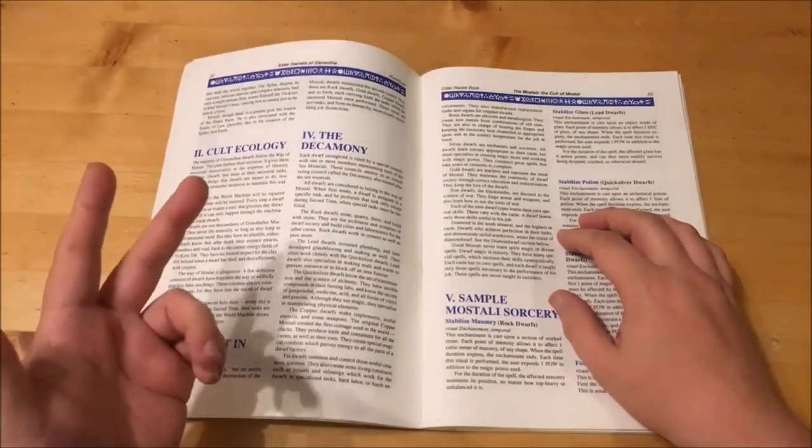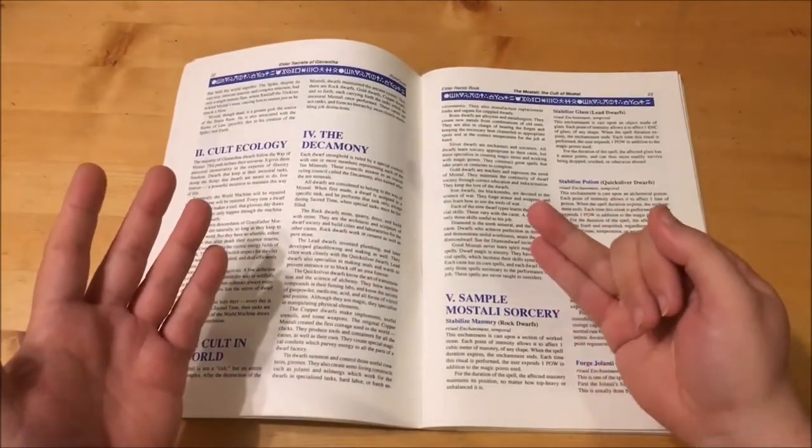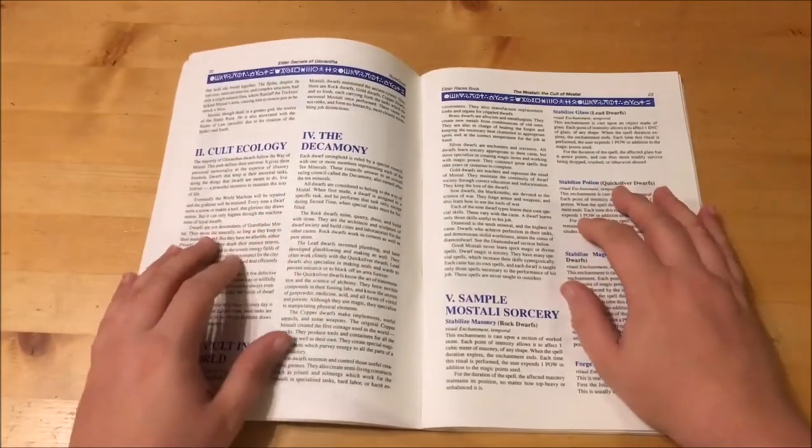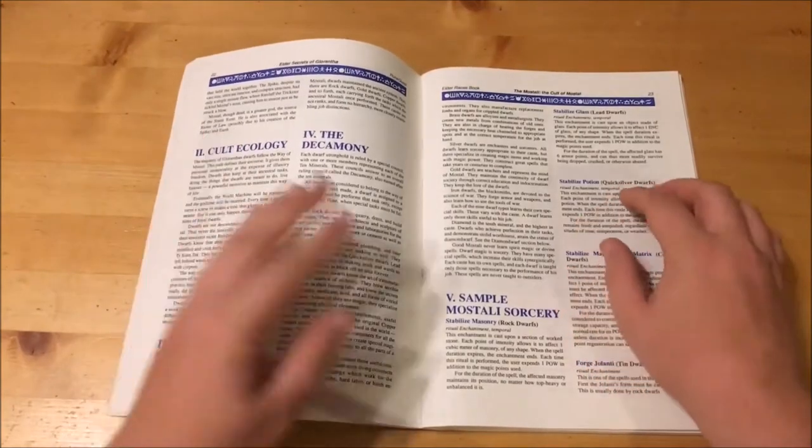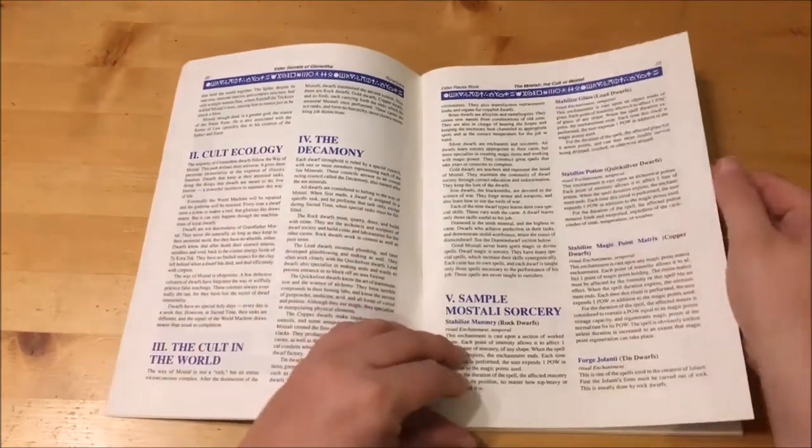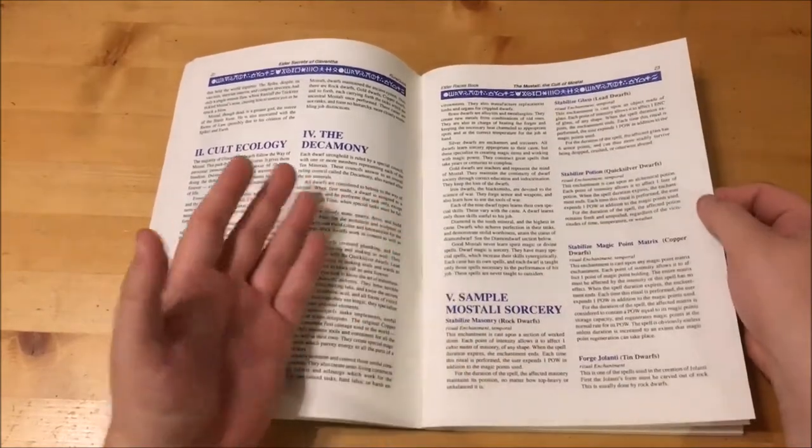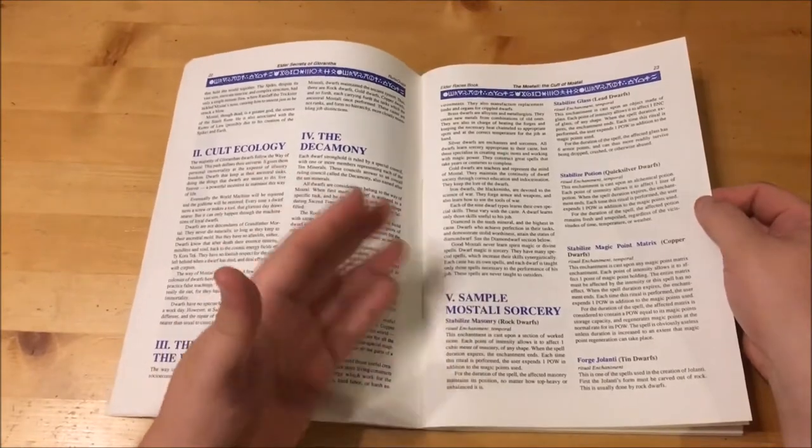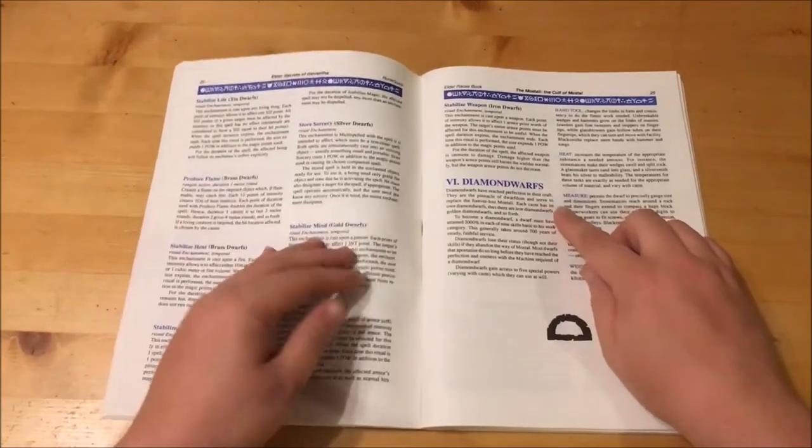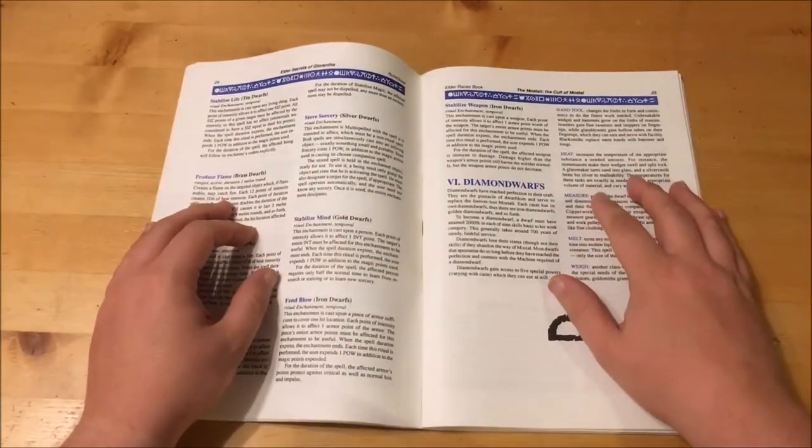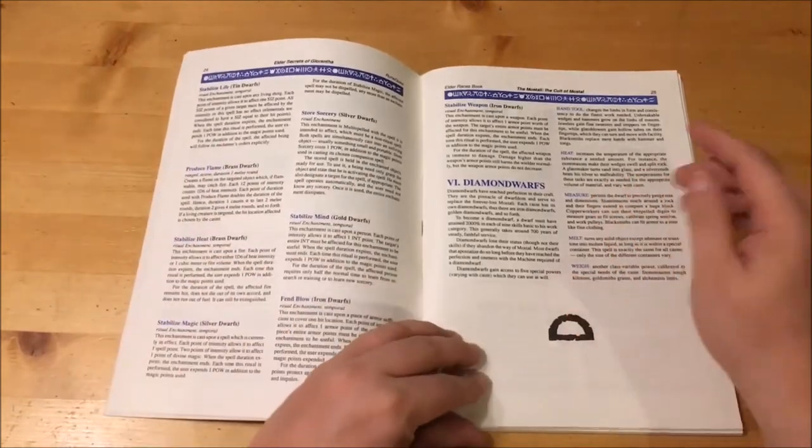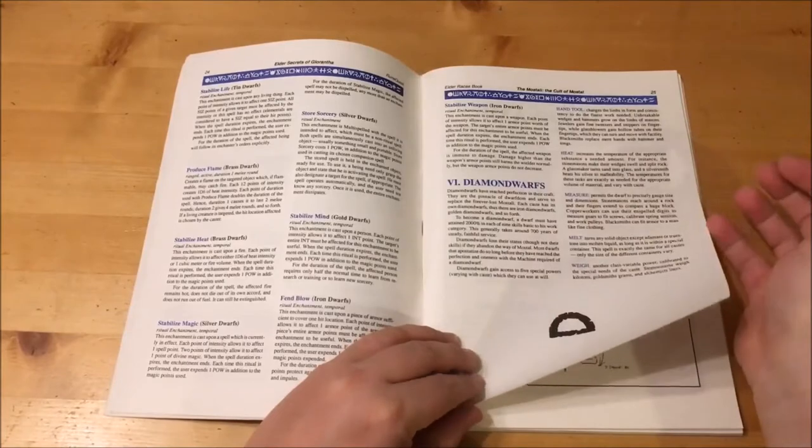The ten minerals are rock, lead, quicksilver, copper, tin, brass, silver, gold, iron and diamond, with diamond dwarves being those that have reached perfection in their tasks. Mostali never learn divine or spirit magic. All dwarf magic is sorcery and all dwarf sorcery is utilitarian in nature. Next we have a list of Mostali sorcery spells, which are all about dwarf tasks such as stabilize masonry, produce flame, store sorcery etc. And finally we have a section on diamond dwarves. To become a diamond dwarf you must have 2000% in 9 basic work skills. This normally takes around 700 years and diamond dwarves gain access to 5 special powers all based around making their work life easier.